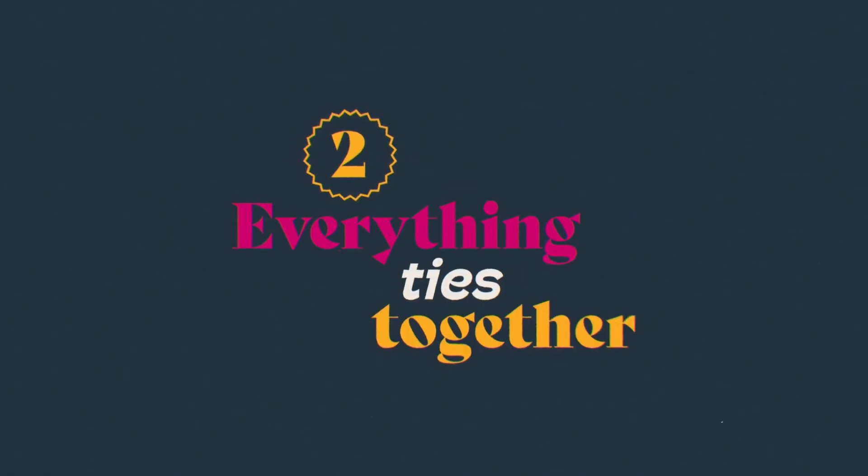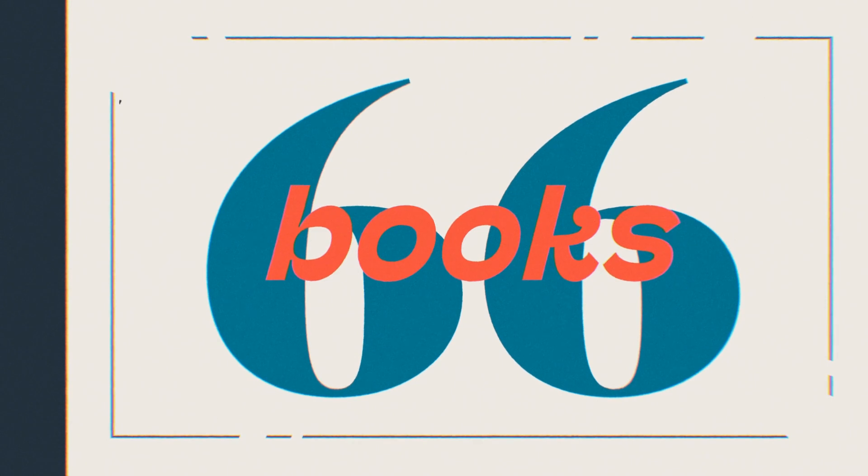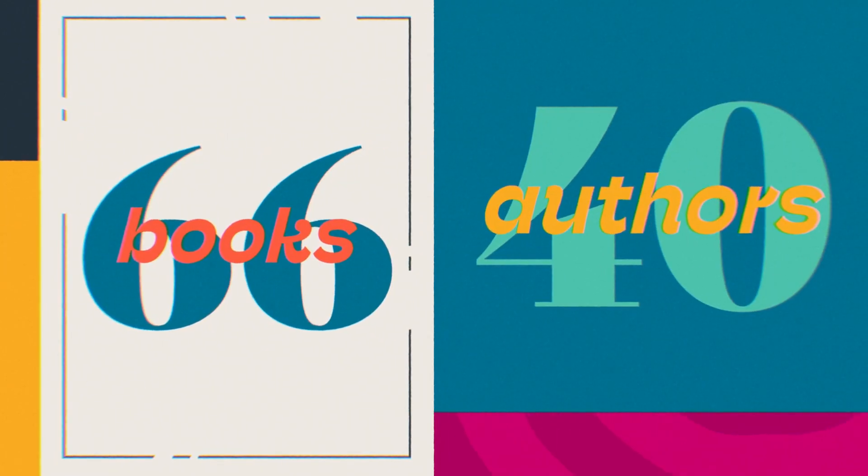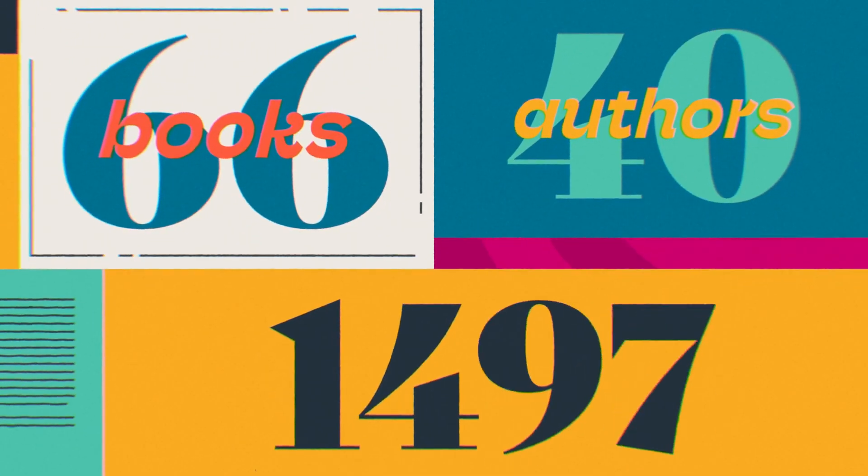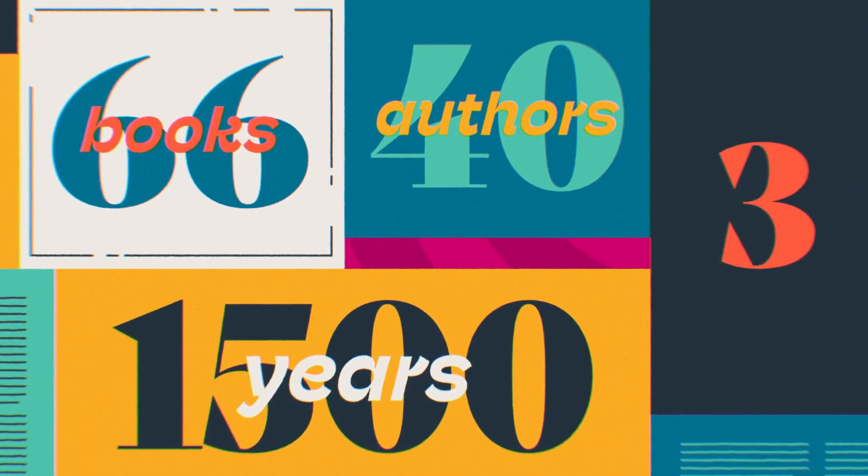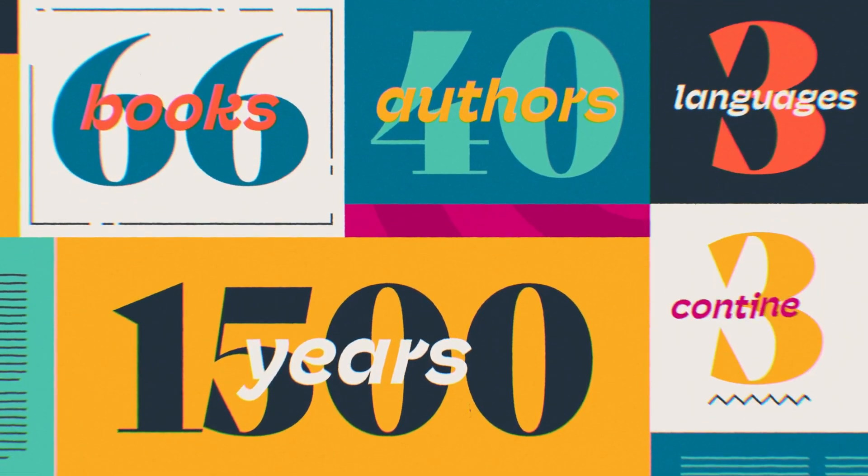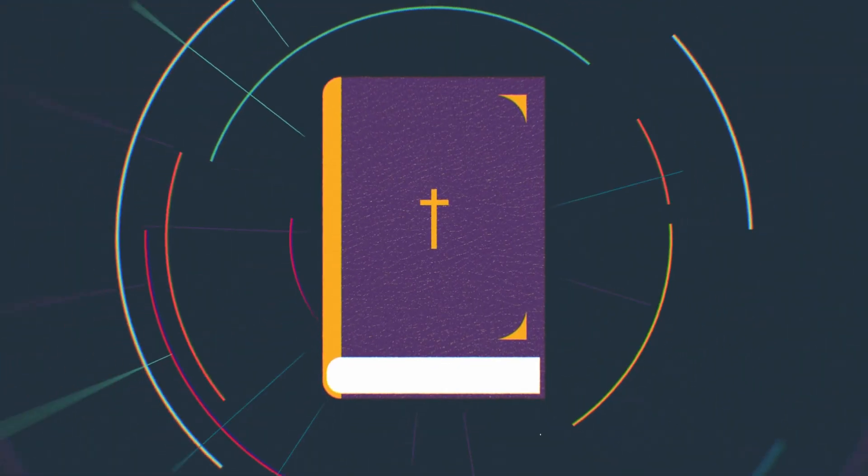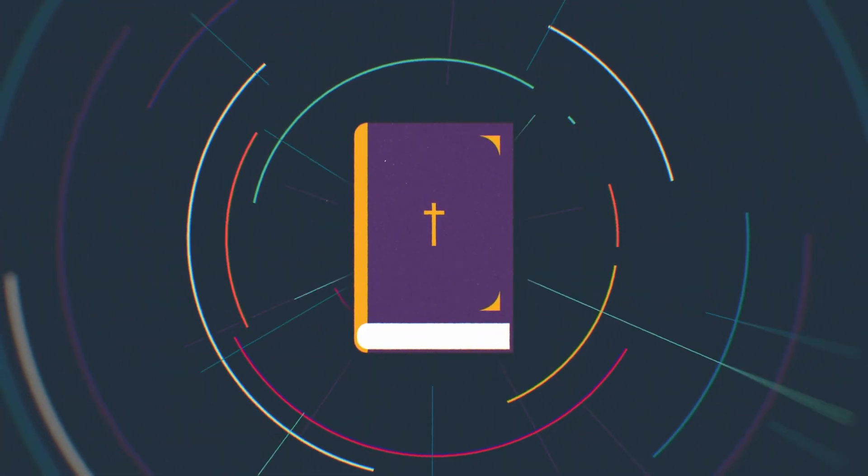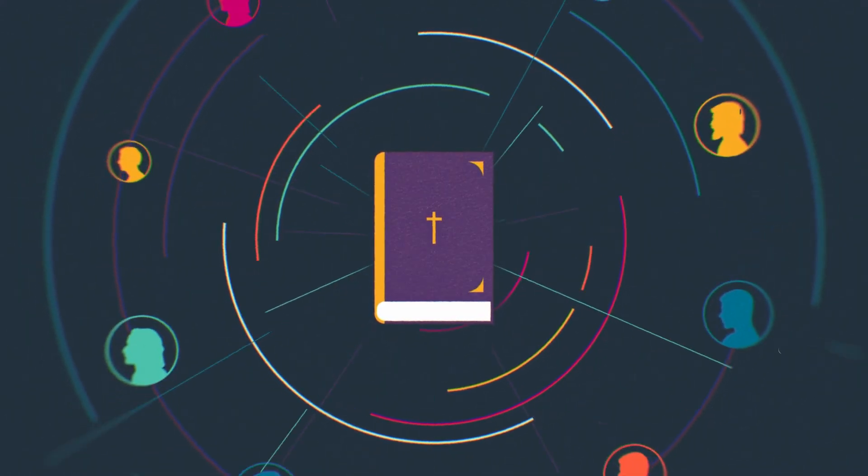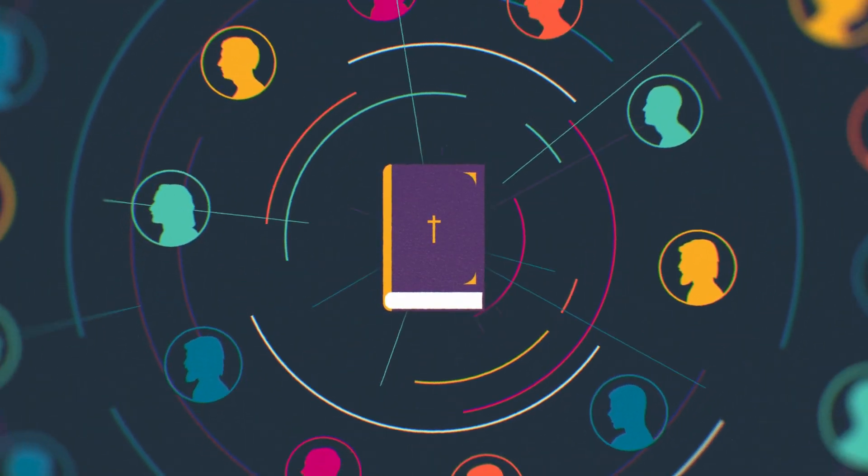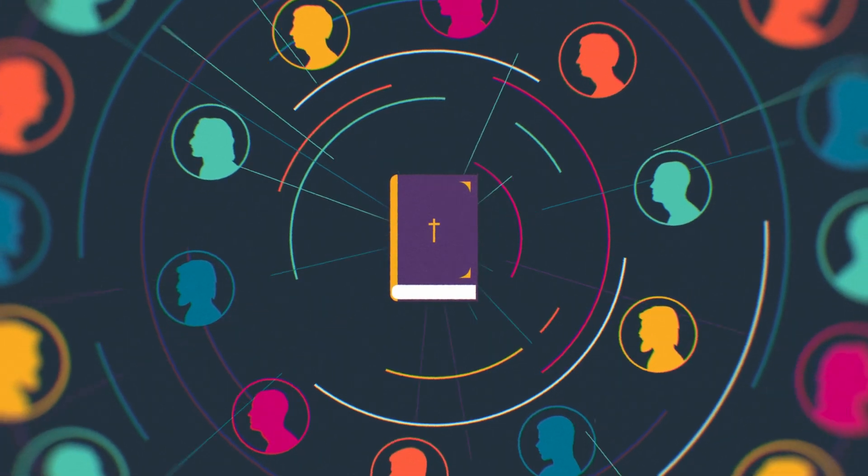Two, everything ties together. The Bible contains 66 books, written by 40 different human authors, over 1,500 years, in three different languages, and on three different continents. Yet, it remains consistent in its message. That's because God is the one true author of the Bible. He chose people to write and record His thoughts and words, guided by the power of the Holy Spirit.